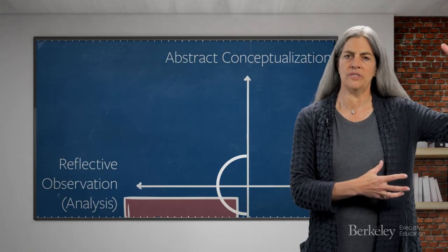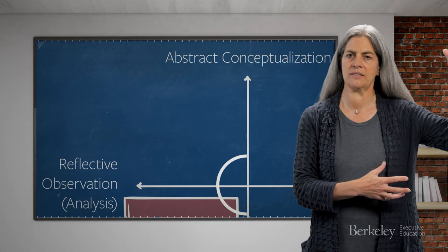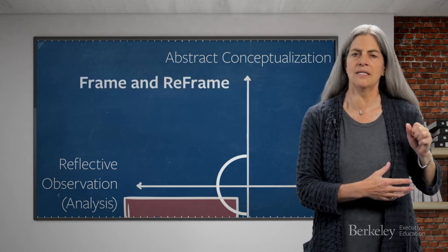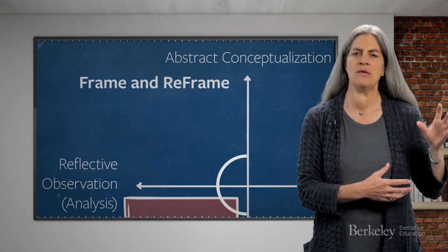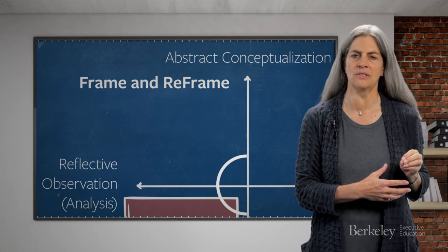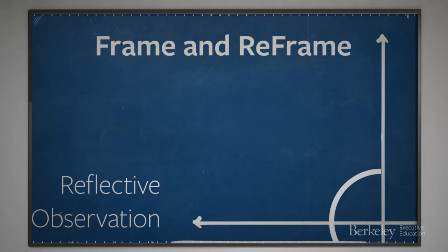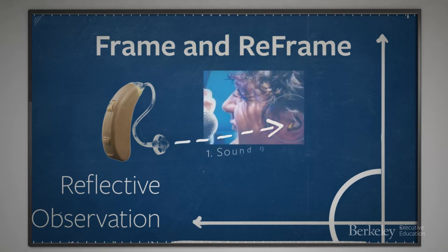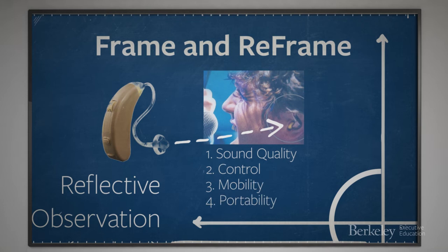The data collected in the observe and notice quadrant is messy data: audio or video recordings of customer interviews, artifacts from the customers' environment, big data yet to be analyzed. In the upper left-hand quadrant, where reflective observation and abstract conceptualization intersect, we make sense of that data, framing and reframing the problems to be solved for the customer. In the Shure case, this was the analysis that led to reframing the problem to be solved from hearing protection to achieving the rock musicians' desired outcomes: sound quality, control, mobility, portability, embodied in the notion of the personal stage monitor.